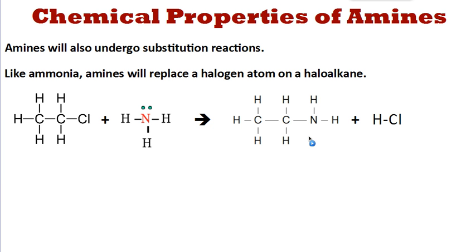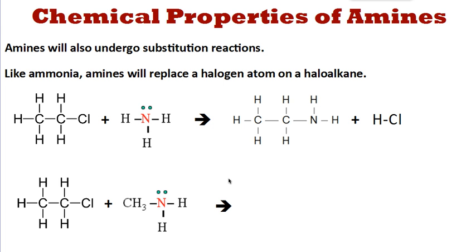What about if we react the same structure, chloroethane, with an amine? We've got methylamine here, or aminomethane — whichever you want to call it. It's going to react in a very similar way, and HCl is going to be one of the products again. One of the hydrogens reacts with the Cl to form the hydrogen halide again, so we get HCl formed again.